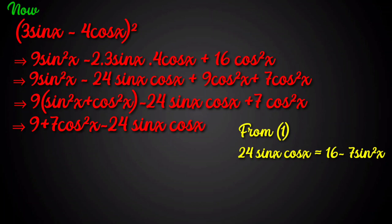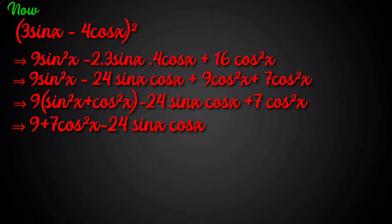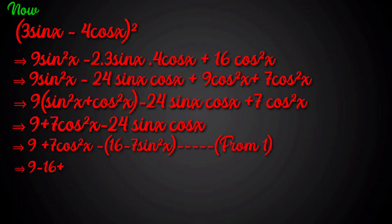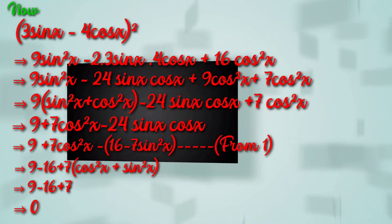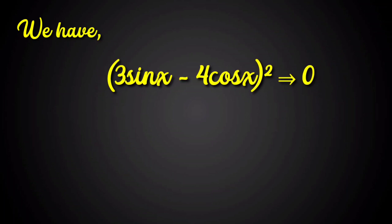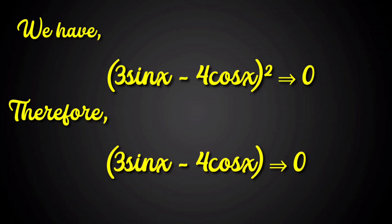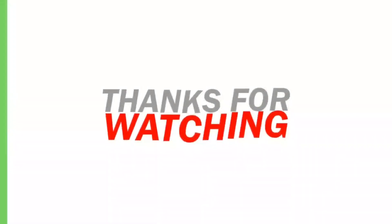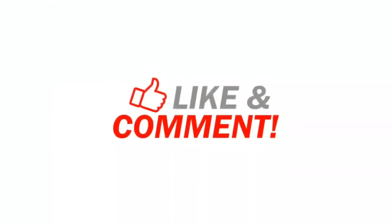From equation (1), 24sin(x)cos(x) = 16 - 7sin²(x), so we can write: 9 + 7cos²(x) - (16 - 7sin²(x)), which implies 9 - 16 + 7(cos²(x) + sin²(x)). Since cos²(x) + sin²(x) = 1, this gives 9 - 16 + 7 = 0. So (3sin(x) - 4cos(x))² = 0, therefore 3sin(x) - 4cos(x) = 0. Hence proved.